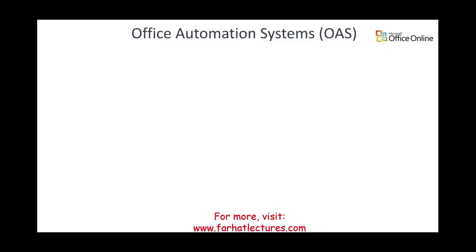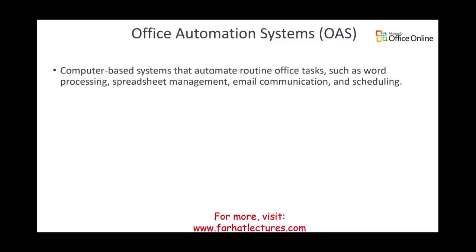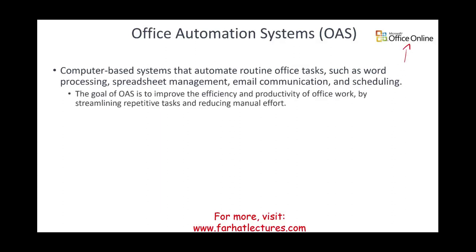What is an Office Automation System? It's a computer-based system that automates routine office tasks — word documents, spreadsheet management, email communication, and scheduling. What are we really looking at? We're looking at Microsoft Office, Office 365. This is what an Office Automation System is. The goal is to improve the efficiency and productivity of office work by streamlining repetitive tasks and reducing manual effort.